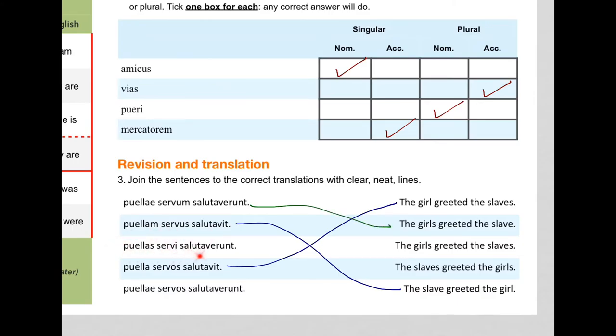This one here. We've got puellas. Now that must be accusative plural. If we remember from earlier up here. That vias there is accusative plural. So they can't be doing any greeting. The slaves. The nominative plural. Like pueri. Are doing the greeting. So the slaves greeted the girls. All plural there. If you note. So that must be that one.